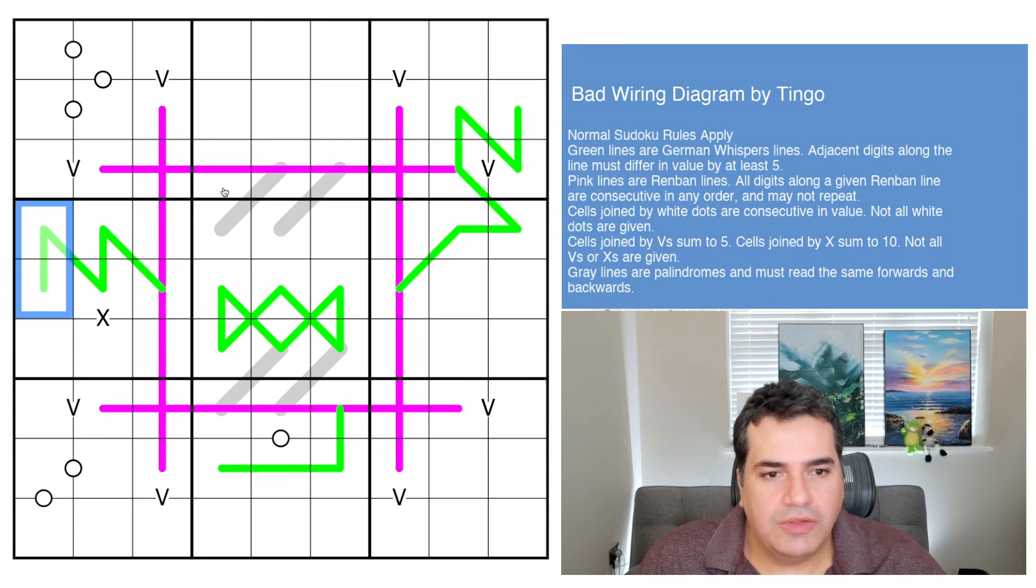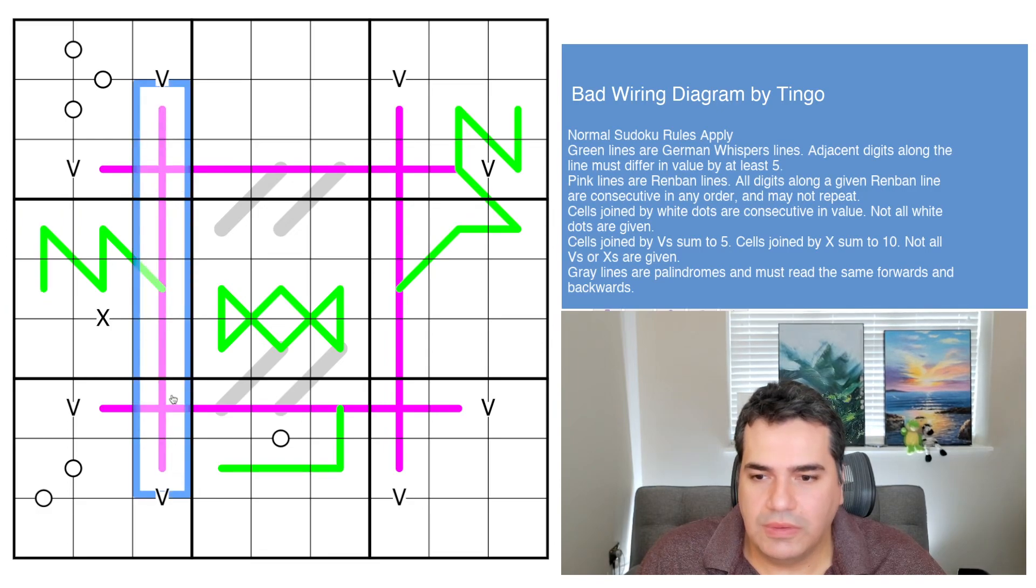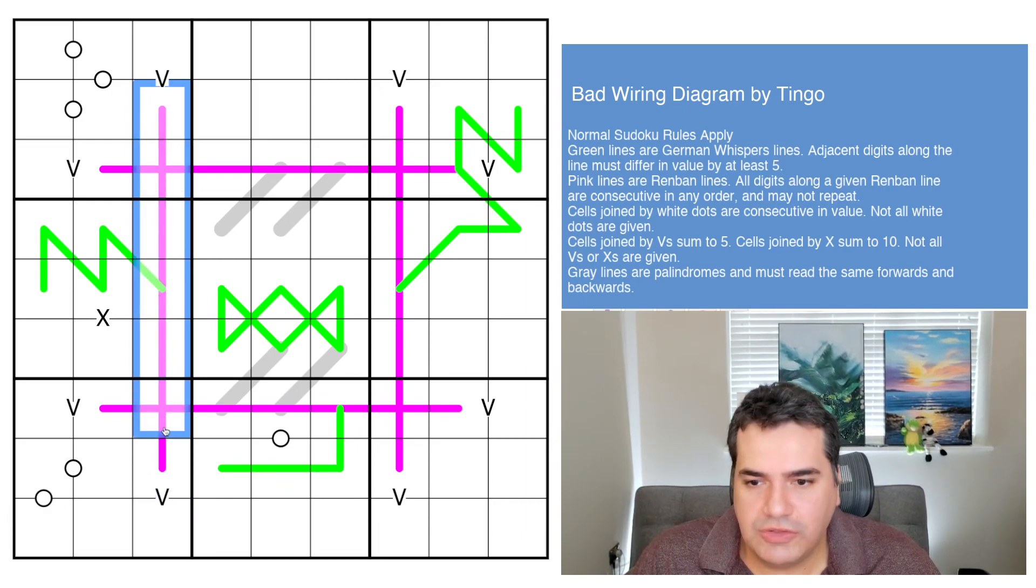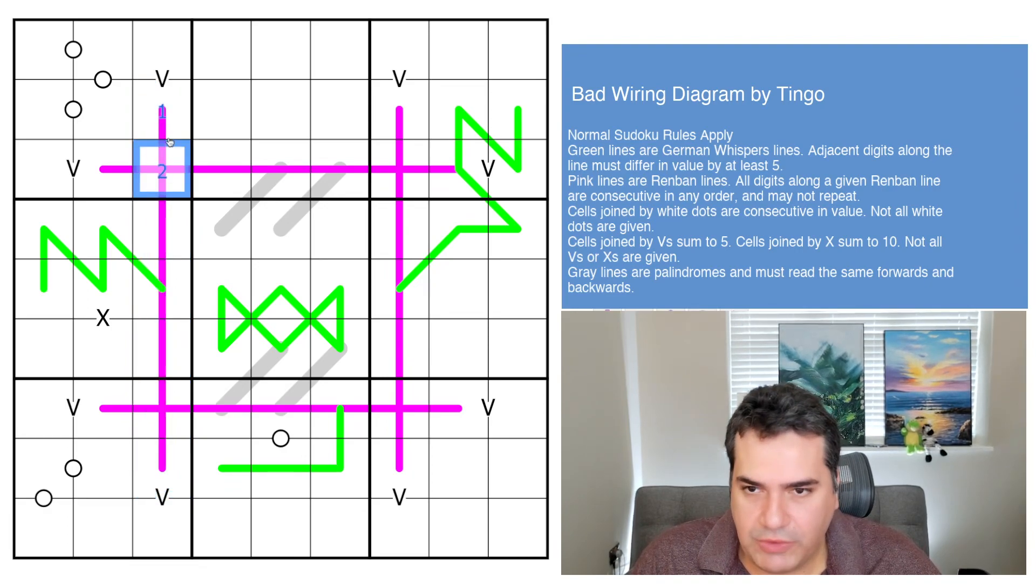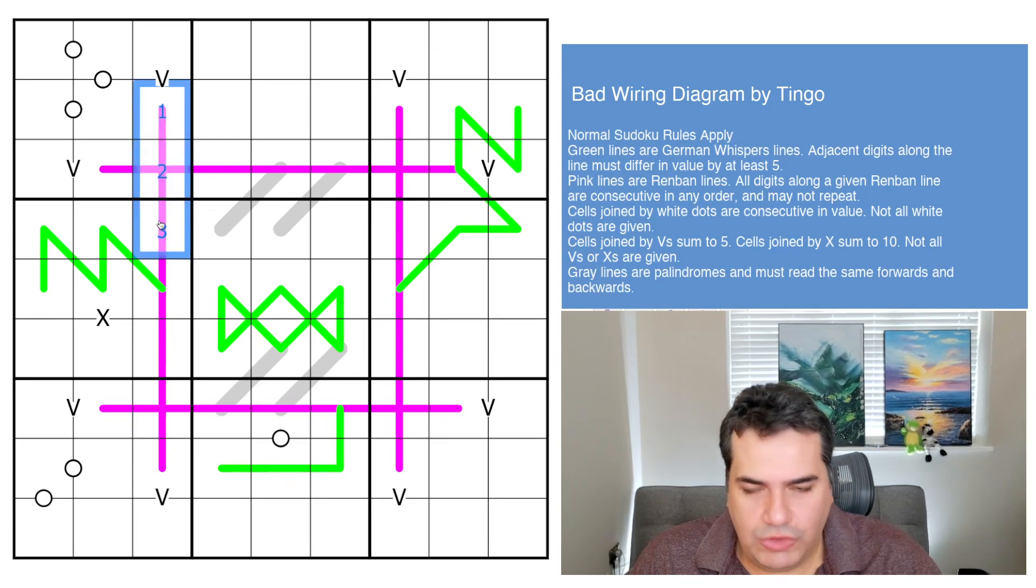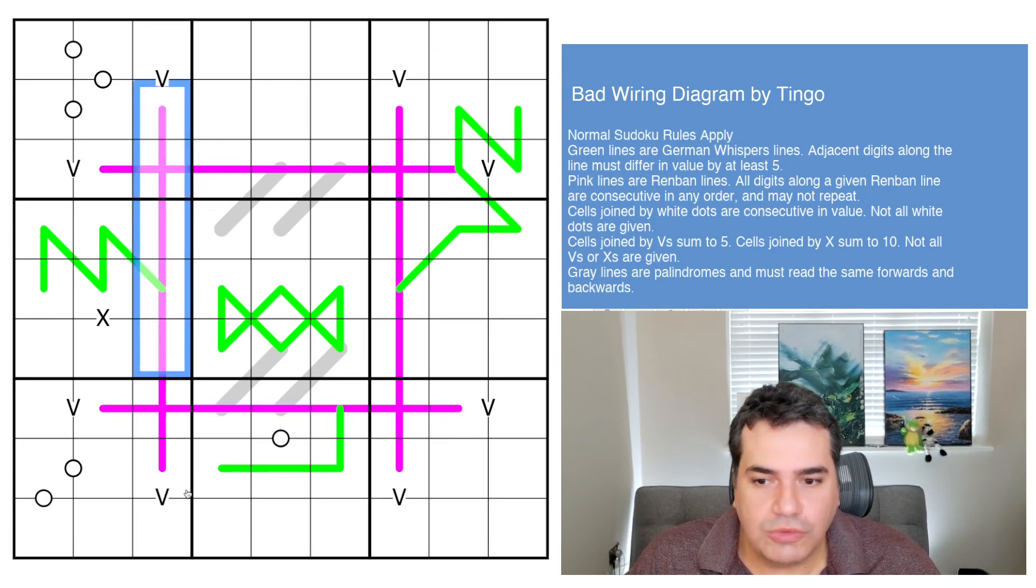Next, we have renban lines are consecutive in any order. I think this is the first time we've actually had renban lines on the puzzle. So we've got here what is a seven digit renban line, or seven cell. So essentially, you could have the digits 1234567, or the digits 3456789. But it doesn't matter if they are consecutive, as in they don't have to go in a particular order. But you need to make sure that they are contiguous along this line.